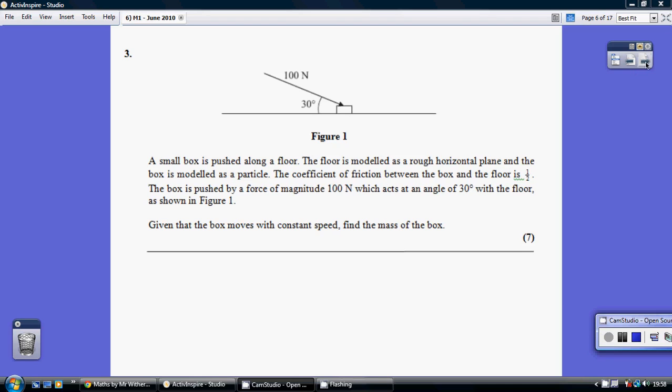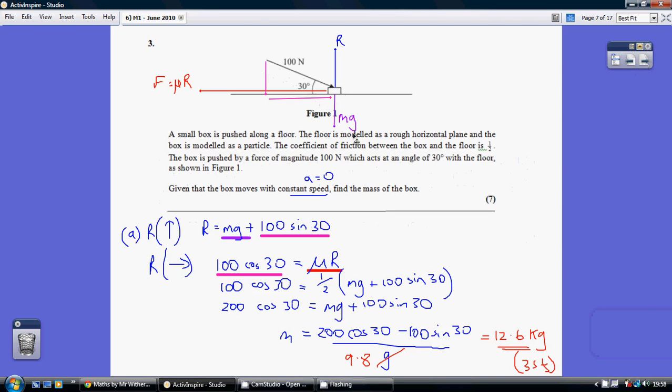Question 3. Start off by including all the various forces in your diagram. We've got the normal reaction going upwards, the weight going downwards, the friction going in the opposite direction to the potential movement, and we've got this diagonal force here which we can break down into its vertical and horizontal components.